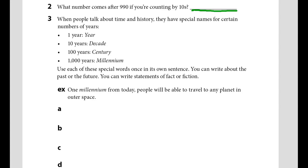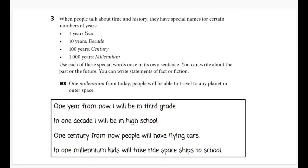Let's look at a few more examples. One way to use the word year in a sentence would be, one year from now, I will be in third grade. A way you can use the word decade in a sentence could be, in one decade, I will be in high school. If you wanted to use the word century, you could say something like this. One century from now, people will have flying cars. Now, that may or may not be true. But remember, your sentence can be fact or fiction. Another way to use the word millennium would be, in one millennium, kids will ride spaceships to school. These are just a few examples to warm up your brain. Do your best to think of your own sentences.